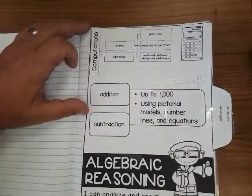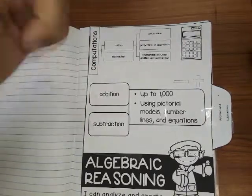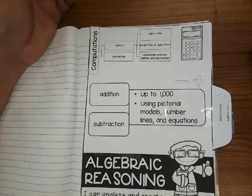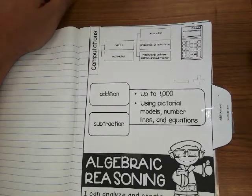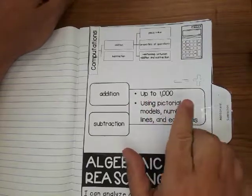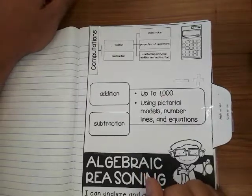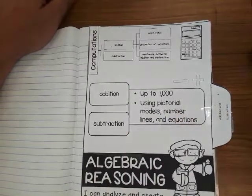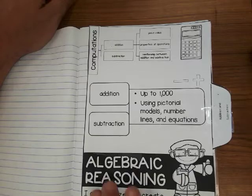So it says 'computations' right there. The two computations we're going to be working with on this unit are addition and subtraction. We're going to build on our place values, the properties of operation, and the relationship between addition and subtraction. It has a little tree diagram there. When we're adding and subtracting, we're going to be working up to 1,000. The number right before 1,000 is 999, so most of the numbers we'll be dealing with are three-digit numbers in the hundreds place. We're going to be using different models to model the way we do addition.